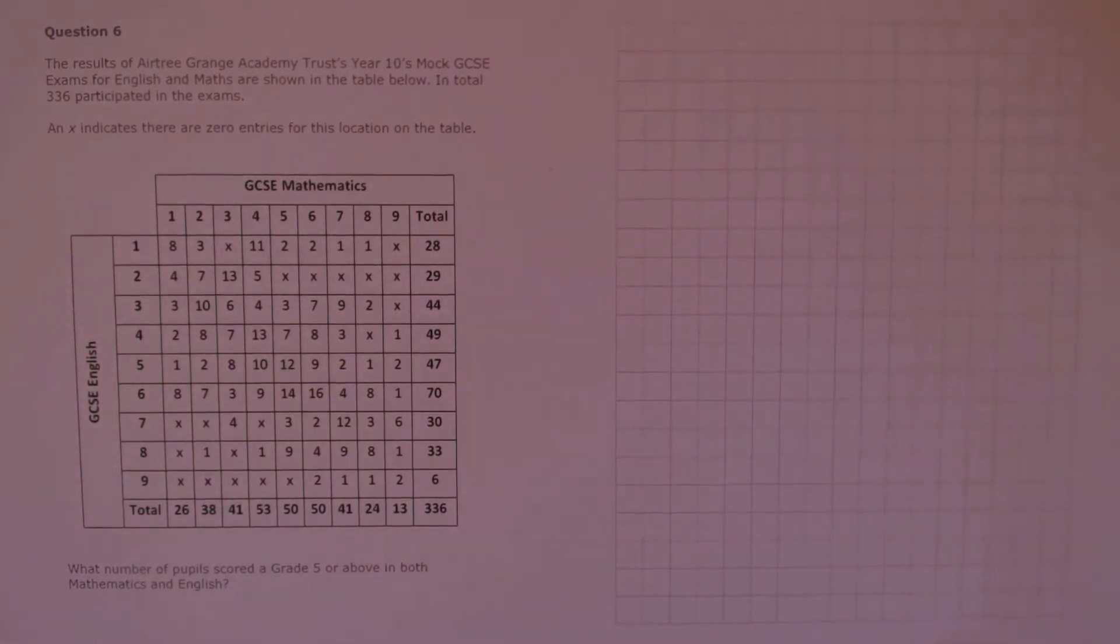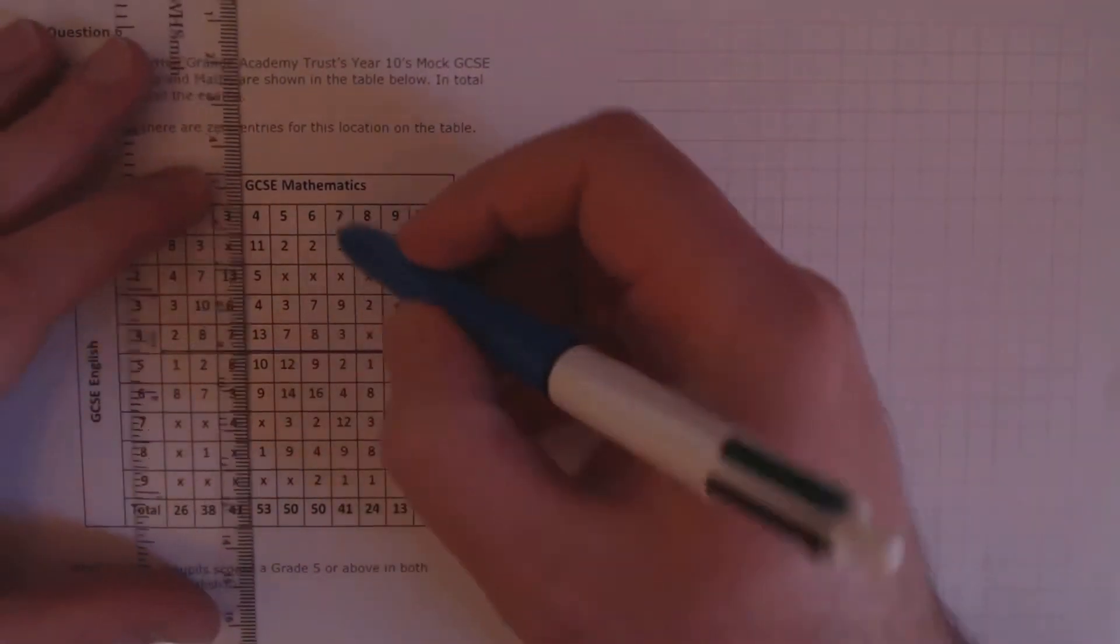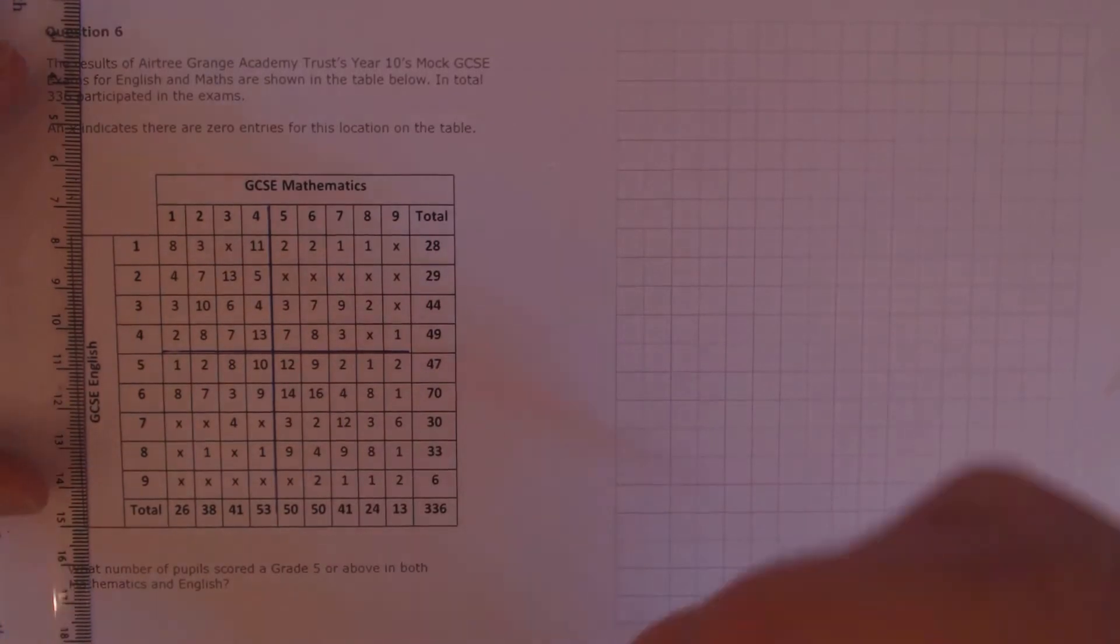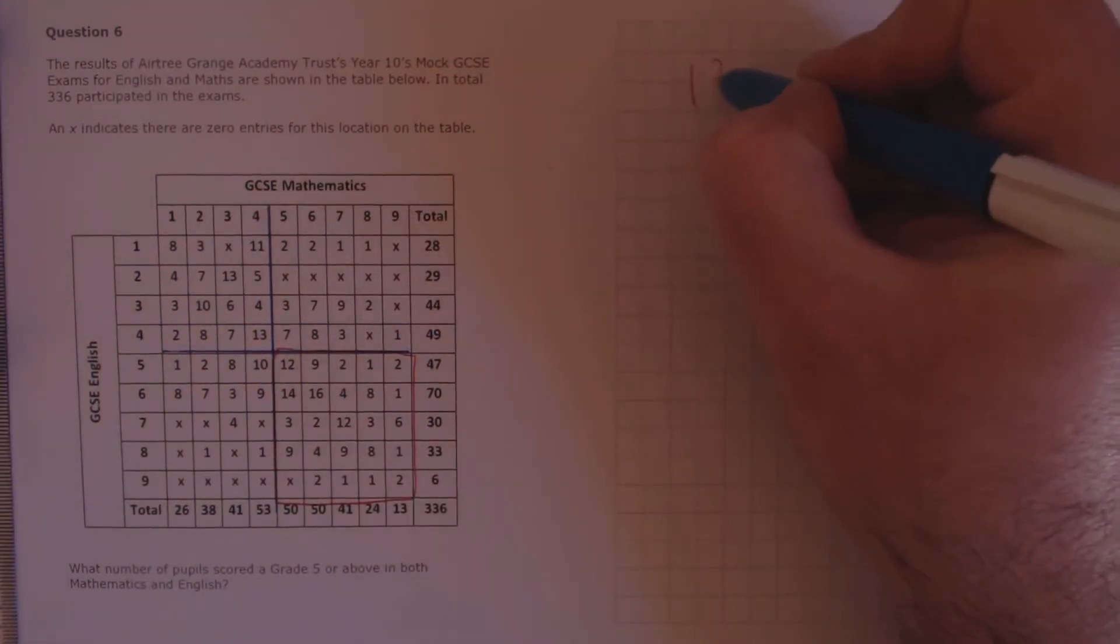Question 6. The results of Airtree Grange Academy Trust Year 10 mock GCSE exams for English and maths are shown in the table below. In total, 336 participated in the exams. A cross indicates that there are zero entries for this location on the table. What number of pupils scored a grade 5 or above in both mathematics and English? So we need to find out which area has a grade 5 and above. For English, that is this one here. Anything below the line has grade 5 and above. And for mathematics, a similar line here. Anything to the right of this line has grade 5 and above. So we're looking at this region here. We need the total of all the entries in that table, which comes out to 132.